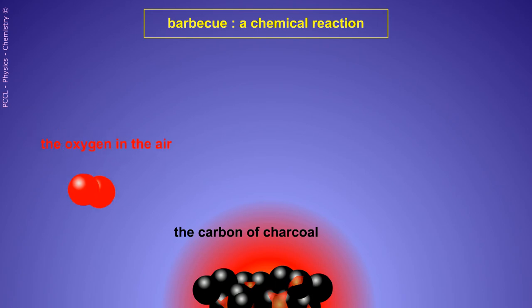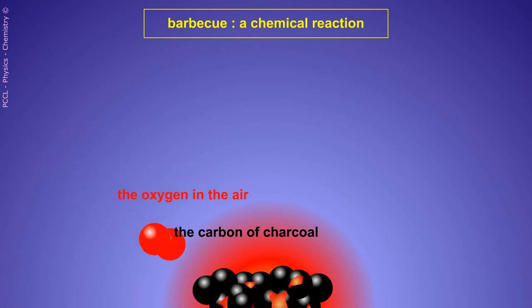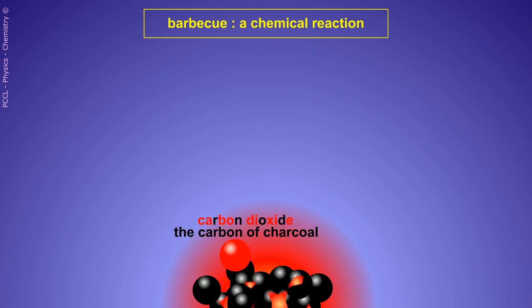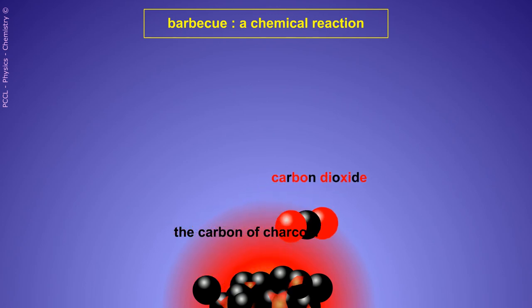O2 is in the air — there's 20% dioxygen in the air. Carbon, C, is found in charcoal. The product is CO2, carbon dioxide.